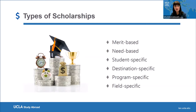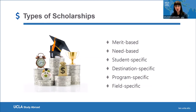Program-specific scholarships are specific to the program you are participating in, and we will cover that later in the presentation. And then we have field-specific, which is based on your major or field of study. For example, we have a scholarship at UCLA called the Komar-Shedeller Scholarship, which gives priority to students from comparative literature and Scandinavian languages majors and minors.